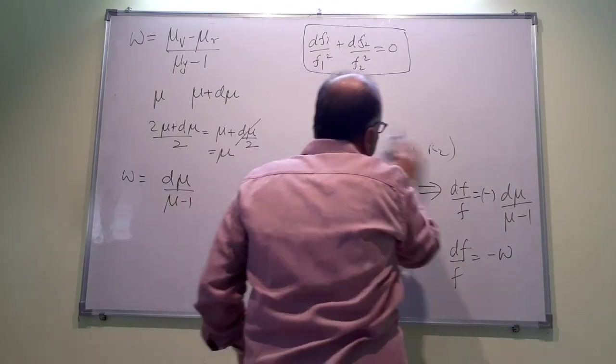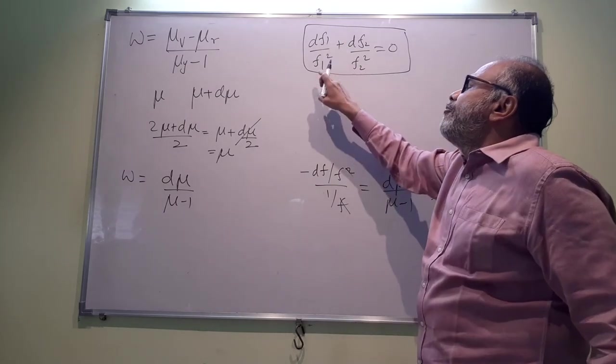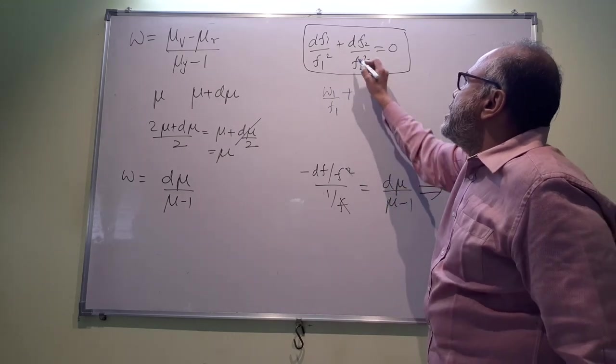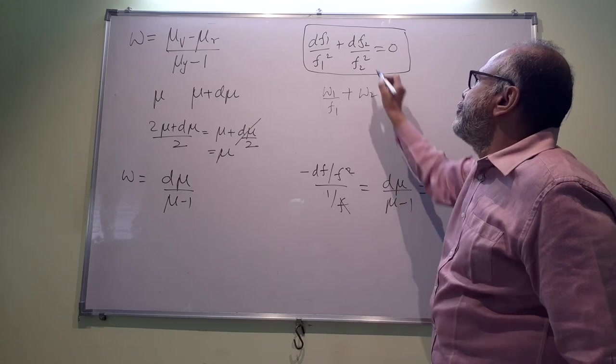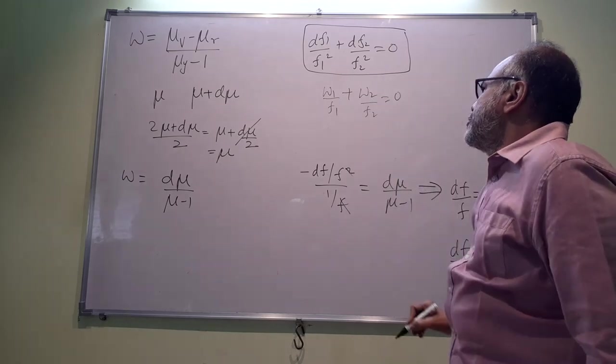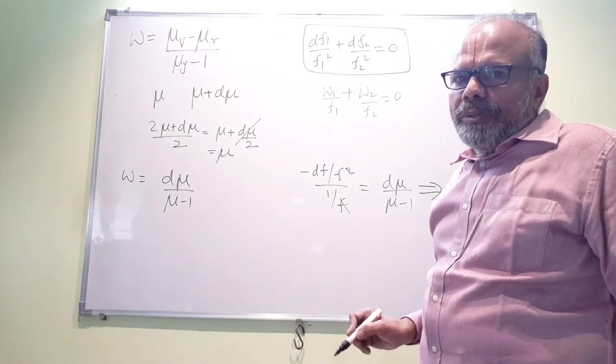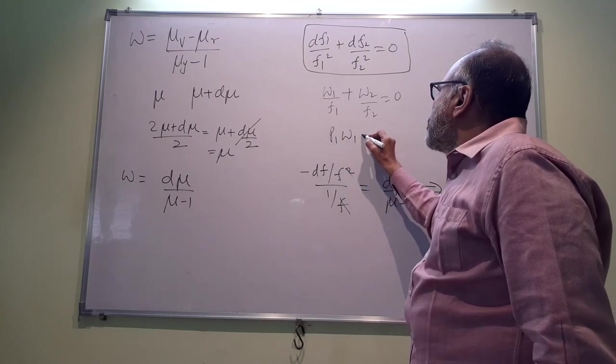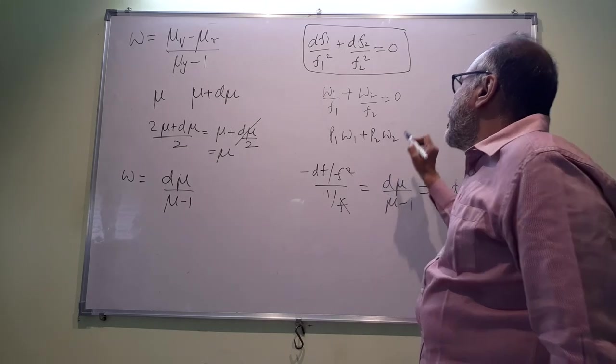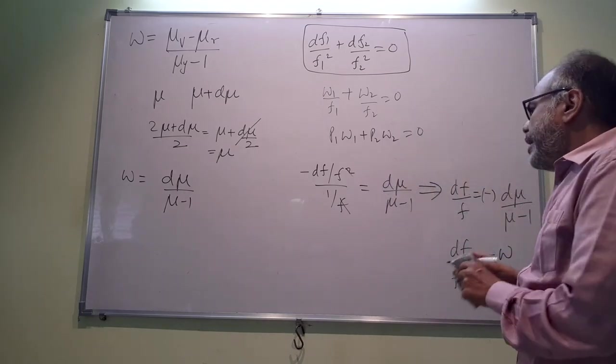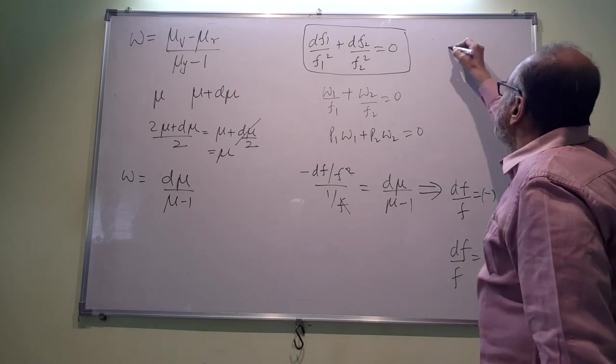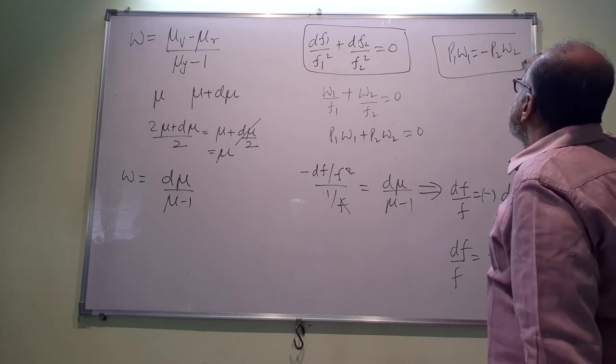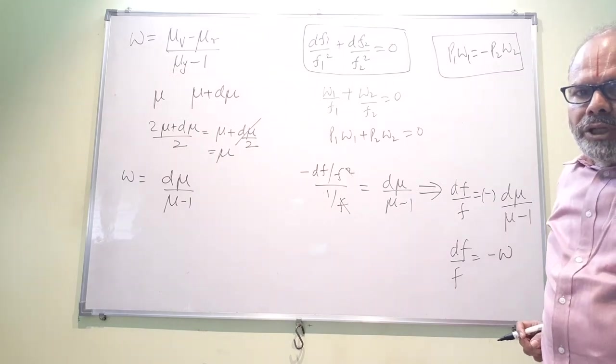So let us focus our attention on this equation. We can now write this as df₁/f₁, we can write it as ω₁, and there will be one f₁ in the denominator. df₁/f₁ divided by f₁ is the optical power of a lens. So I can say this is P₁ × ω₁, this will be P₂ × ω₂ = 0. That gives us P₁ω₁ = -P₂ω₂.